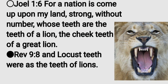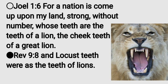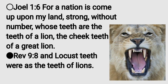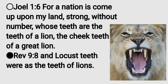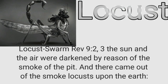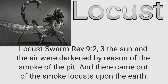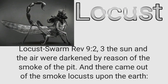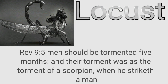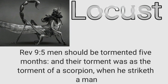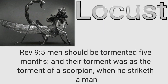This is an army of locusts and we can see this perfectly in Revelation. In Revelation 1:6, 'A nation has come upon you, strong without number, whose teeth are the teeth of the lion.' And this is the same thing in Revelation 9:8 — the locusts had the teeth that were the teeth of lions. Same description. Revelation also has the swarm, where the sun and the air was darkened by reason of the smoke of the pit, and there came out of the smoke locusts. That's a locust swarm taking place in Revelation chapter 9, with the fifth trumpet being blown. And it talks about the sting, and men should be tormented five months — their torment was the torment of a scorpion when he strikes a man. Remember the five months.